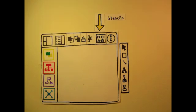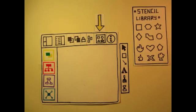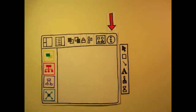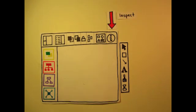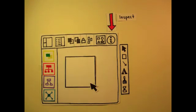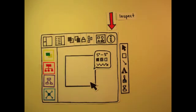This button opens up the stencil palette. There are a wide variety of stencils to use. You simply click on a shape to add it to your document. You can even make your own stencils. The inspector allows you to see the dimensions, colors, fill, and strokes of an object and modify them easily. Simply click on an item and a description box will appear.